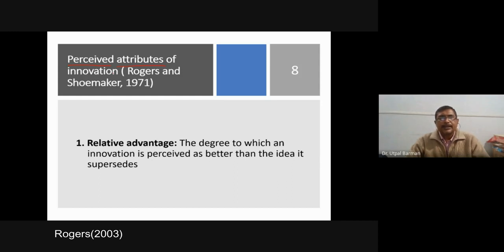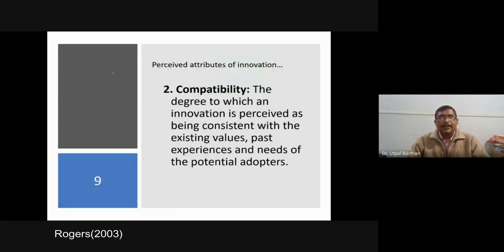The first attribute is relative advantage — the degree to which an innovation is perceived as better than the idea it supersedes. If a new technology is better than the present one, it will be adopted. Whether it is better is also determined by the adopter — he will perceive that it is better than the existing one. That relative advantage may not be true for another adopter. For example, a tractor may be a good innovation for a big farmer, but for a marginal farmer purchasing a tractor is not a suitable decision. So for the same innovation, perception will differ, and we have to consider for which group of people it is relatively advantageous.